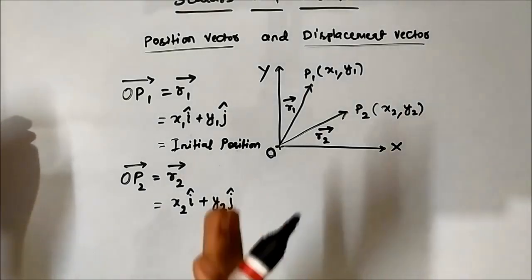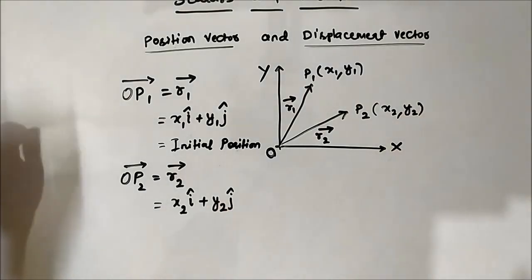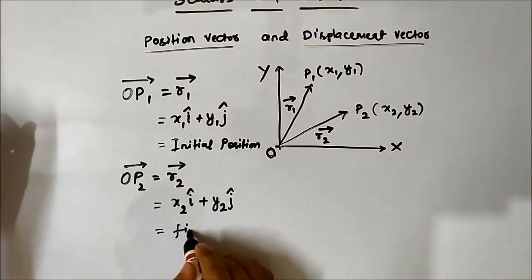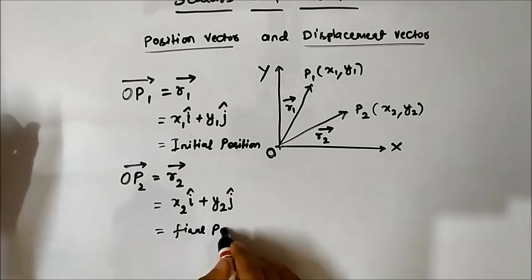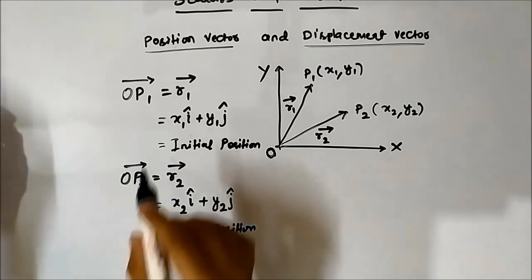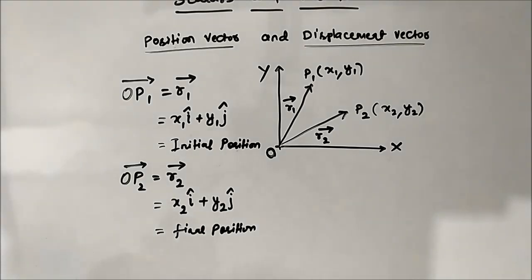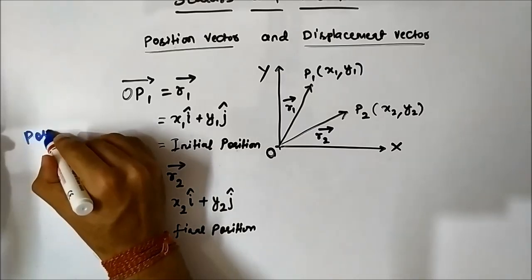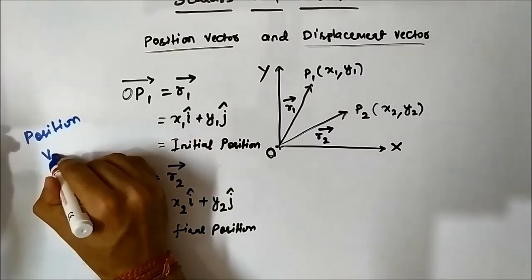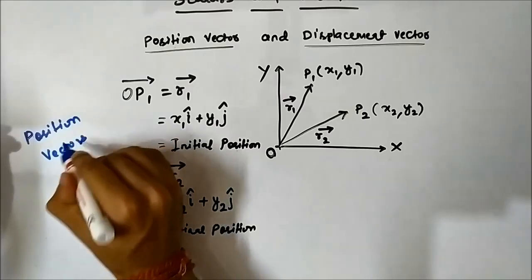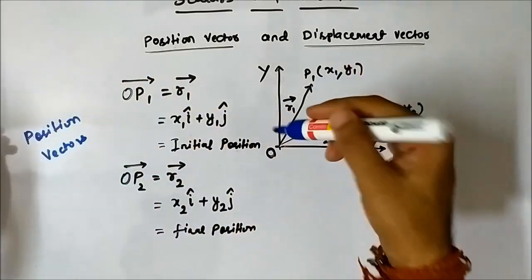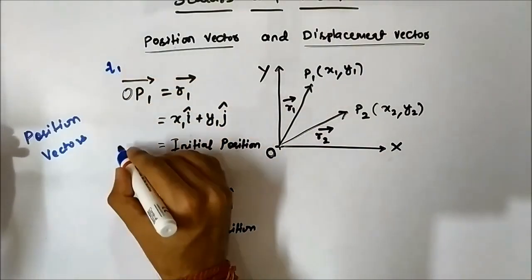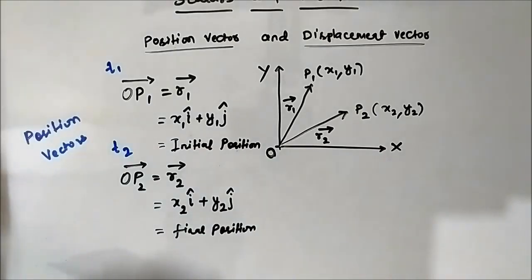I have already covered that in the previous video — you can check that out. These are what are called position vectors. They give us information about the position of the object at various points: r1 is at time t1 and r2 is at time t2.